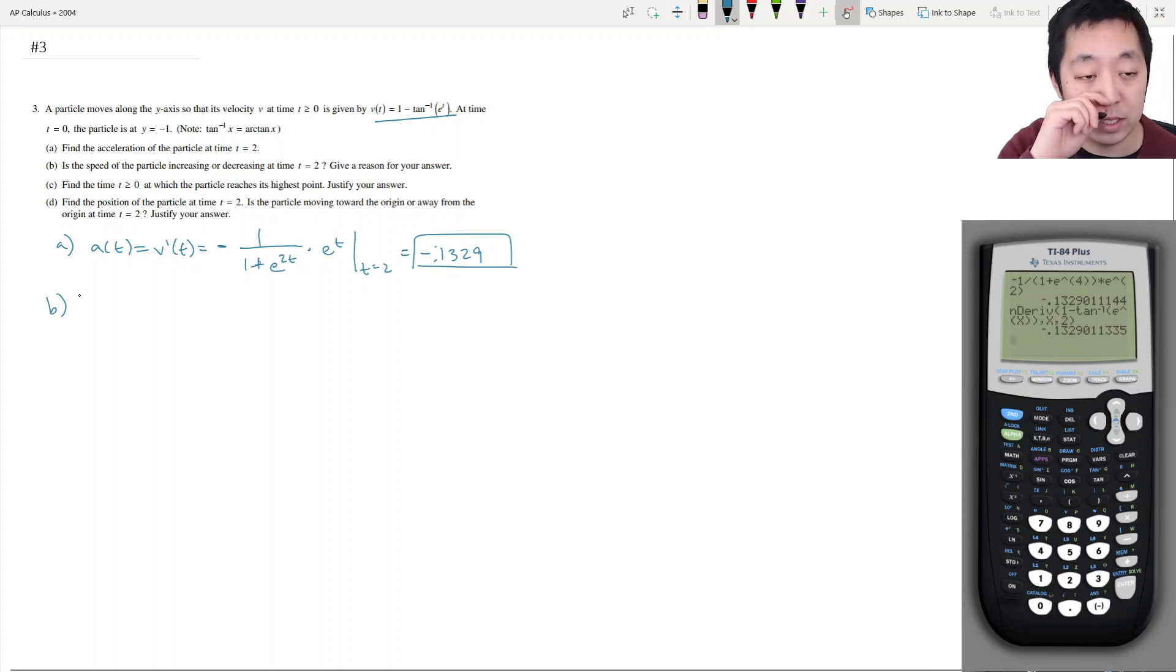Is the speed of the particle increasing or decreasing at time t equals 2? Well, the acceleration is negative. What you need to know is what the velocity is at that point. So the velocity at 2 is equal to, because negative just means that the velocity is going more negative, but that doesn't necessarily mean that the speed is going higher or lower. It really depends on what the velocity is at that time. So the velocity is 1 minus tan inverse e to the 2. And so v of 2 is already negative 0.436.